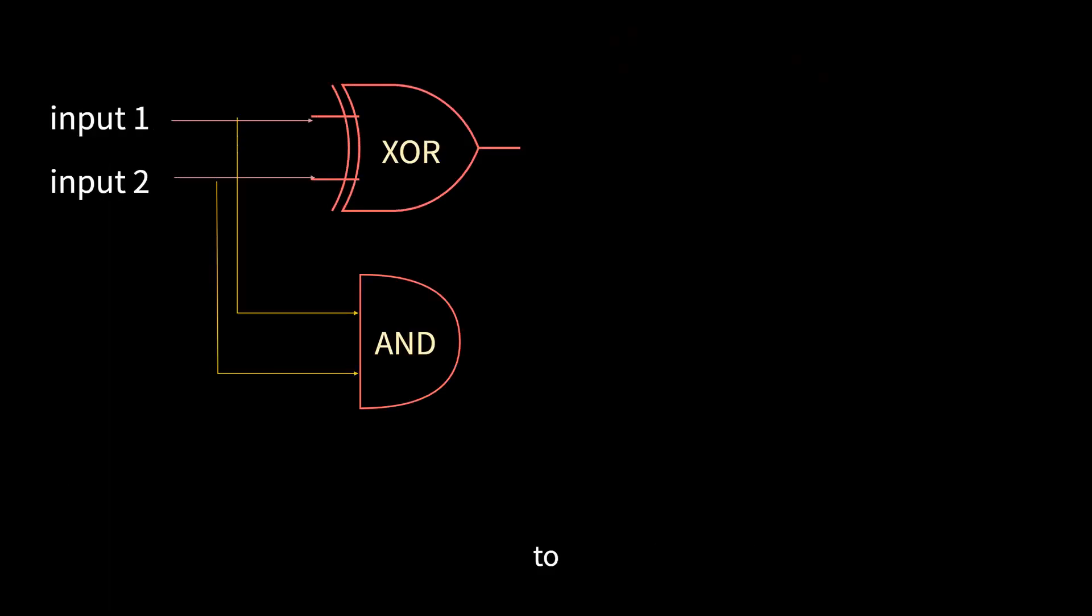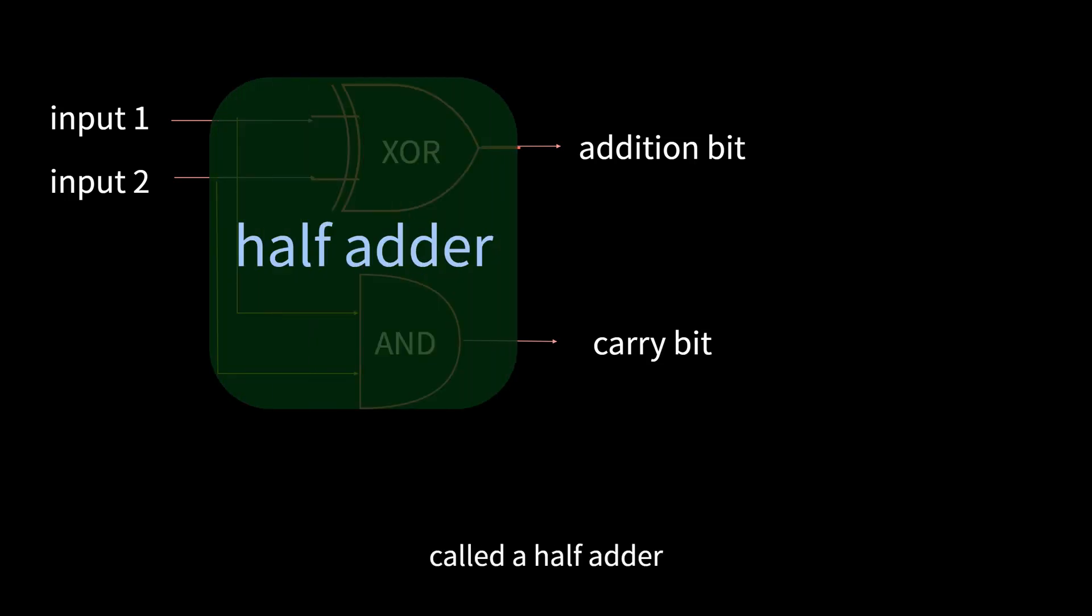Now, we can use XOR gates and the AND gates to realize the output of the addition bit and output of the carry bit, respectively. Put them together, called a half adder.